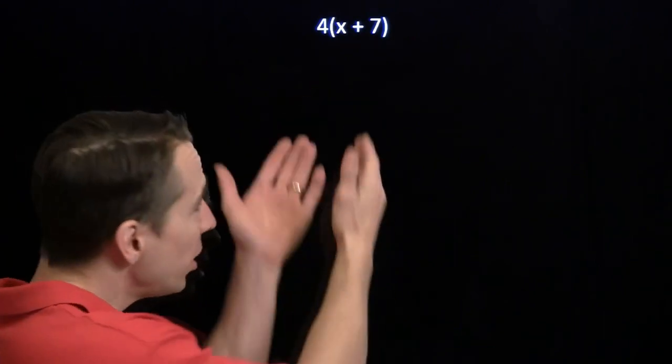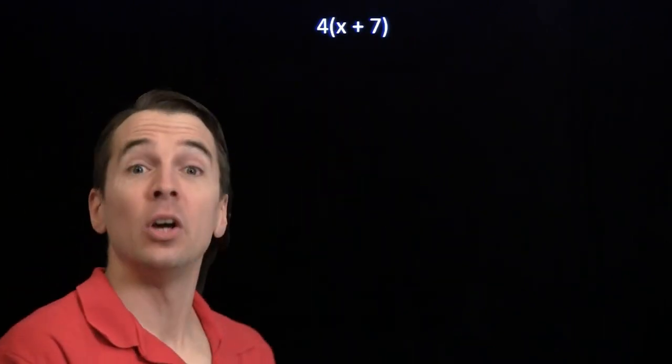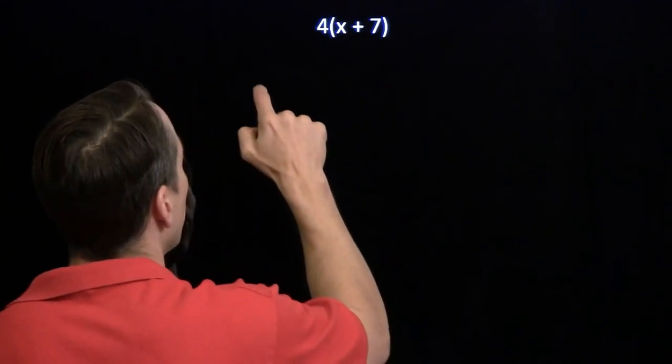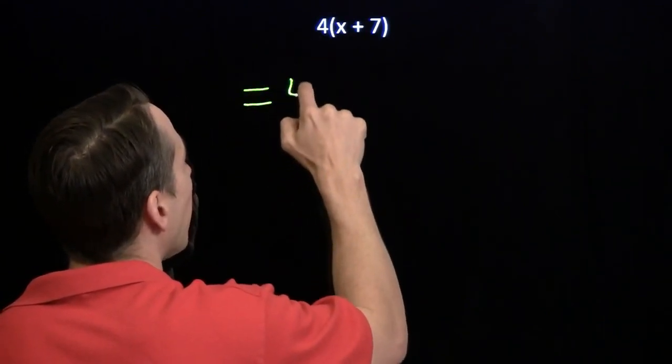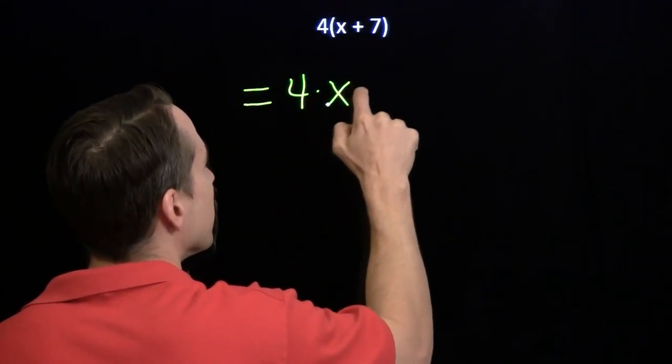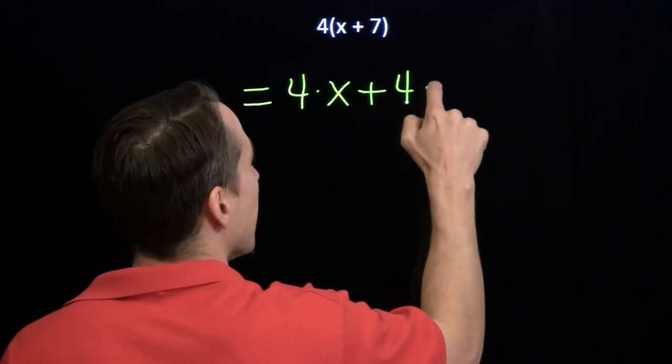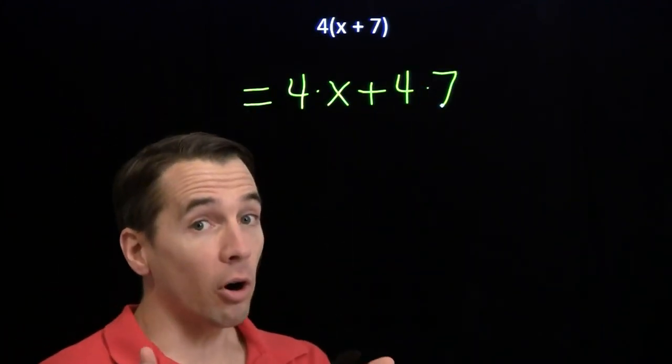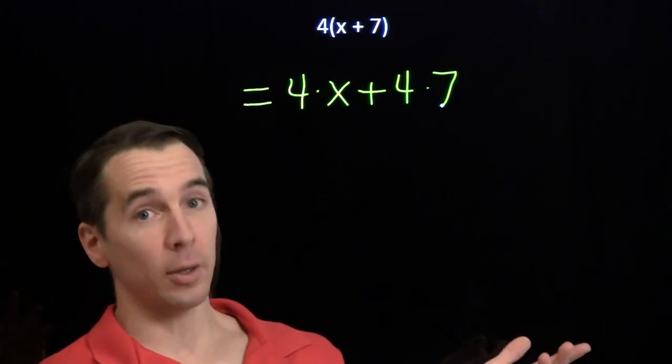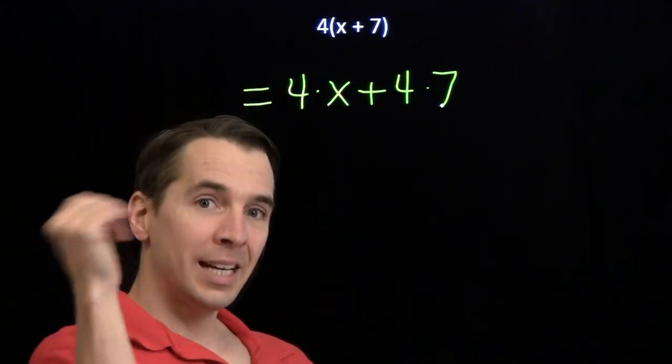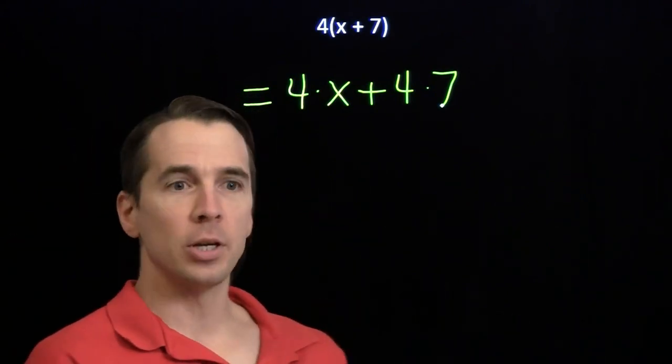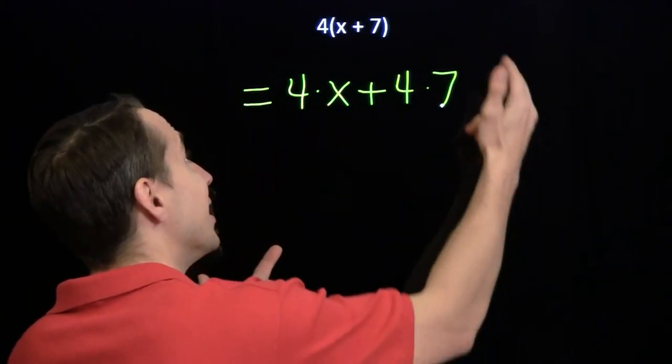We've got 4 times the sum here. We know how to expand this product with the distributive property. We take that 4 and multiply it by each of the terms in the sum, so we have 4 times x plus 4 times 7. Now if you don't already have the distributive property down, you've got to go back and watch those distributive property videos, and then you come back here and see what happens when we run this process in reverse.